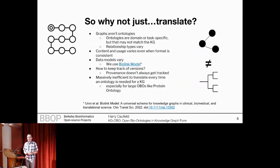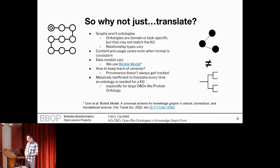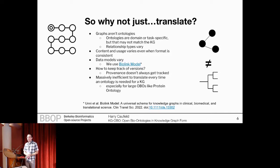My immediate question in pursuing the idea of how do we actually merge OBO ontologies as a knowledge graph is: why not just translate them into a graph structure? They're all pretty simple structures in the end, right? The problem is that graphs are not ontologies. Ontologies are domain or task specific, and that may not exactly match the kind of level of detail that you're working with in a knowledge graph. We also know that the relationship types vary between ontologies and what you may have defined in a knowledge graph — it's highly unlikely that they are exactly the same. We also know that content and usage varies, even when the format is consistent.